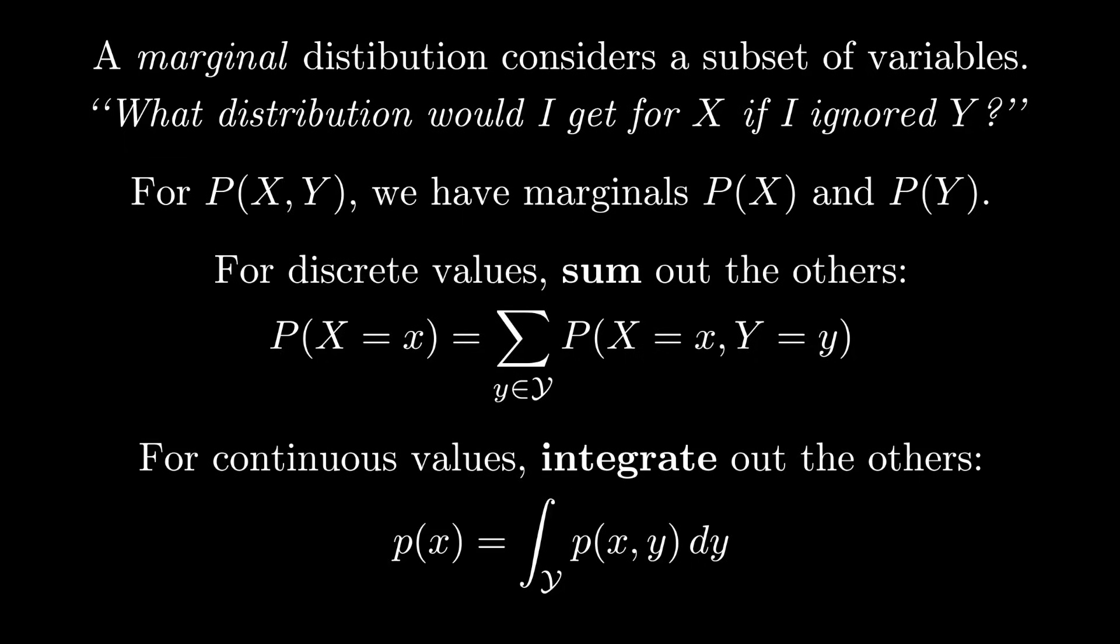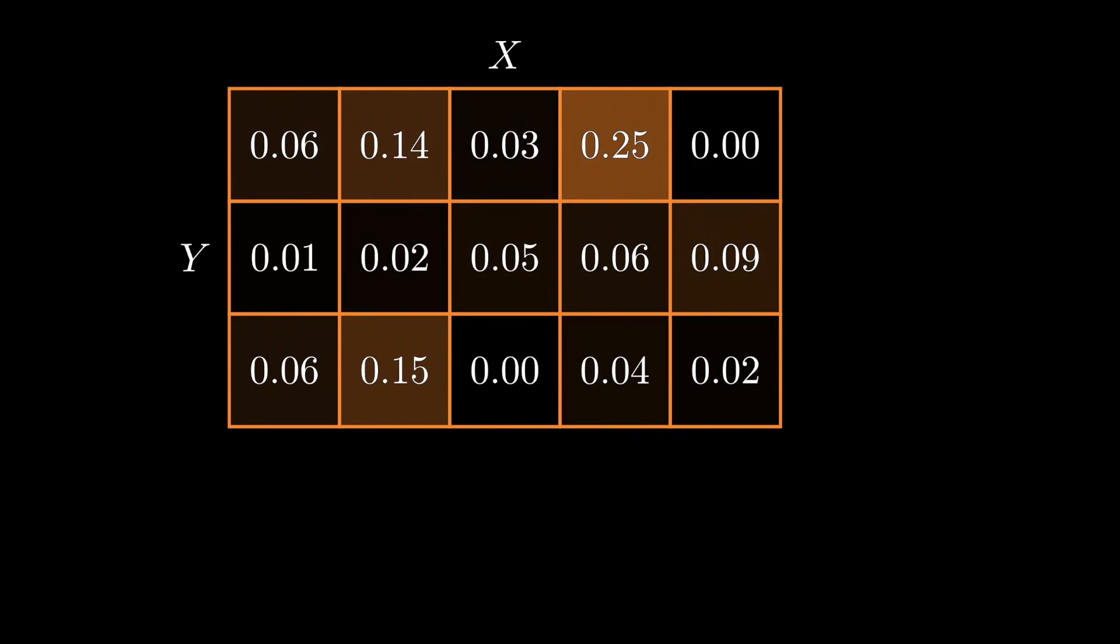For continuous random variables, we compute marginals by integrating out the variables that we don't care about. Here we can visualize marginalization in a discrete distribution in which y has three possible outcomes and x has five possible outcomes.